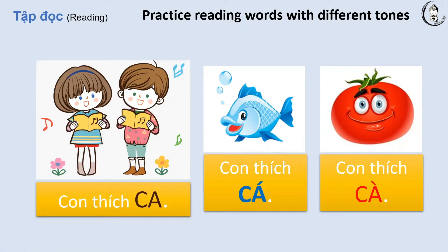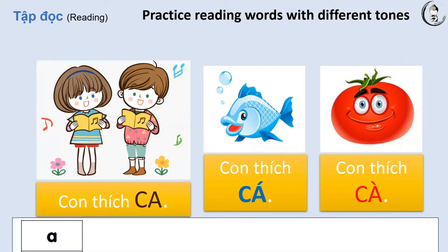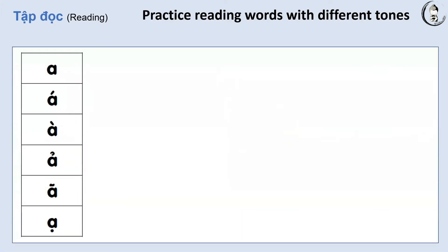So let's hear the six possible sounds that one might hear related to the letter A. Follow the cursor and listen. A, A, A, A, A, A.